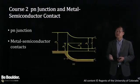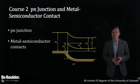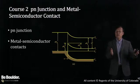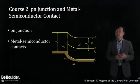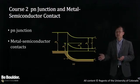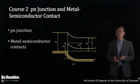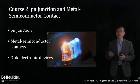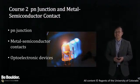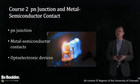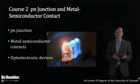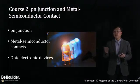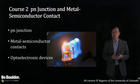Then we discuss metal semiconductor contacts, how they are made, and how they behave under various operating conditions, and how they are similar and different from p-n junctions and other related devices. Finally, we will discuss optoelectronic devices based on the p-n junction and metal semiconductor contacts.